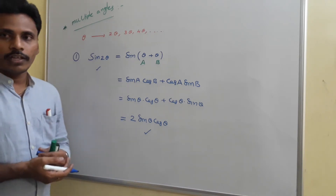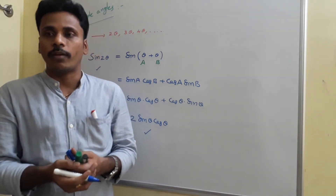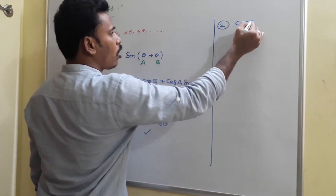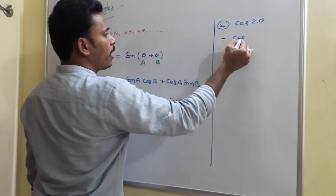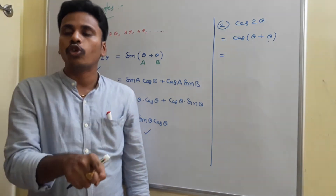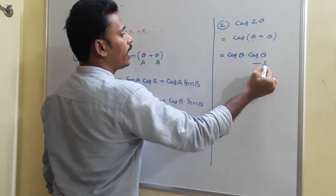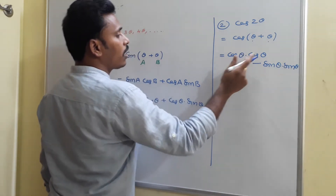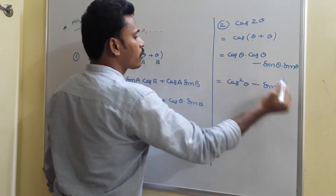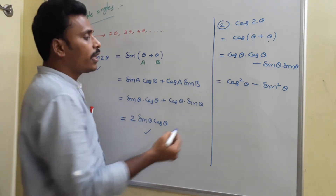Similarly, we can take cos of 2 theta and write it as cos of theta plus theta. Treating the first theta as A and the second as B, cos of A plus B equals cos A cos B minus sine A sine B. Since both A and B are theta, this becomes cos squared theta minus sine squared theta. So cos 2 theta is cos squared theta minus sine squared theta.